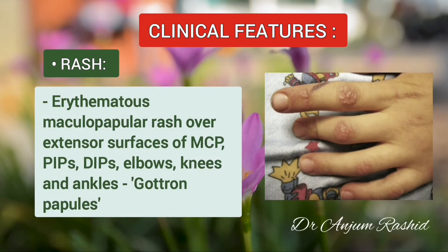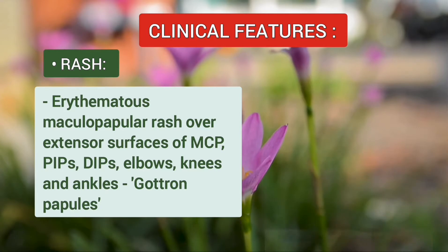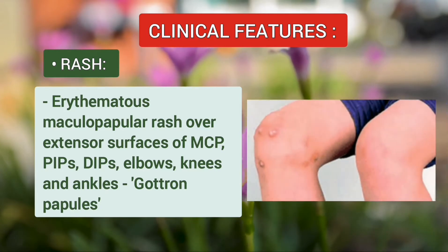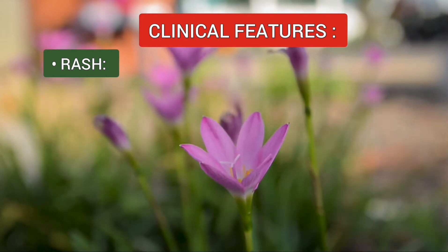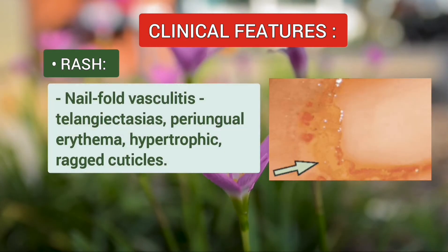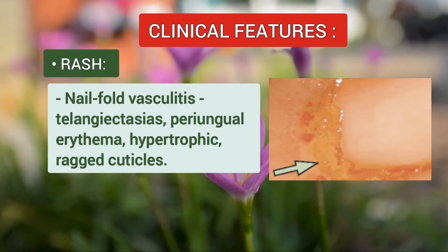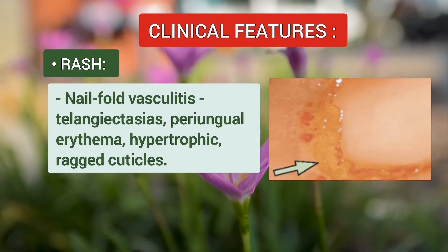Erythematous maculopapular rash over the extensor surface of the metacarpophalangeal joints, proximal and distal interphalangeal joints, elbows, knees, and ankles are known as Gottron papules. Nailfold vasculitis is characterized by telangiectasias, periungual erythema, and hypertrophic ragged cuticles.